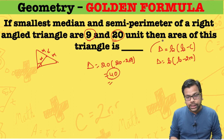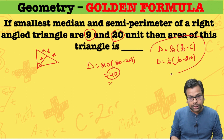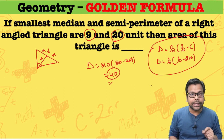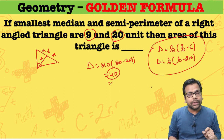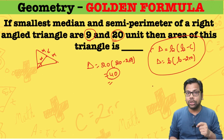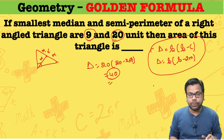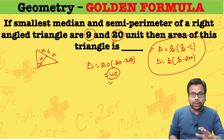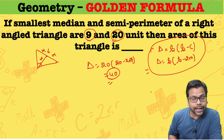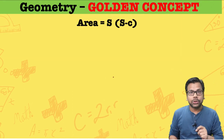Please note this down — it is a very important outcome for a right-angled triangle. Area of the right-angled triangle is nothing but semi-perimeter into (semi-perimeter minus the longest side), i.e., the hypotenuse. This is our golden formula. Now let us see what its proof is.